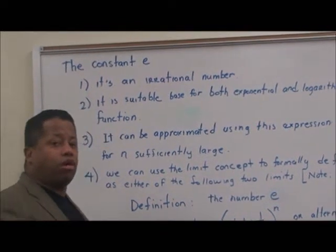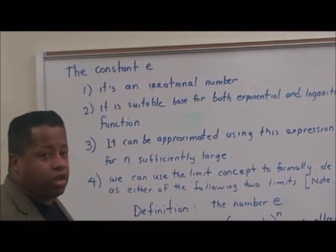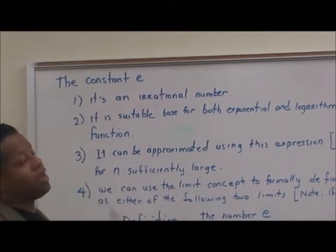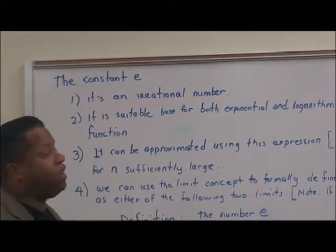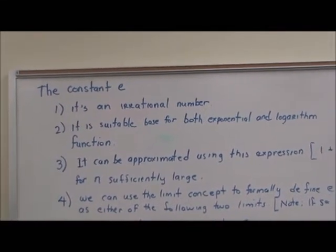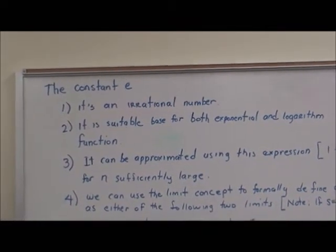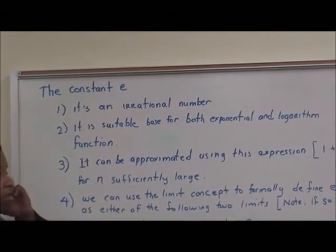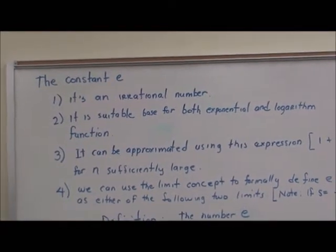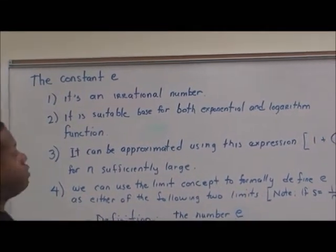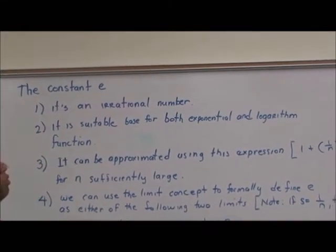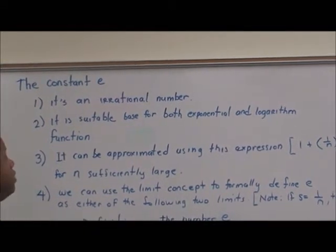Hello, and welcome back to this video. We're going to talk about the constant e. The constant e, which is on your calculator, is an irrational number. It's a suitable base for both the exponential and the logarithmic function.